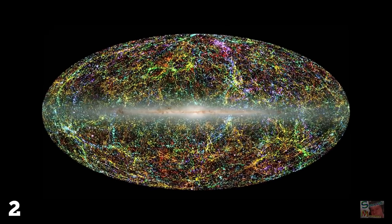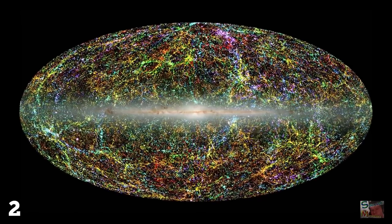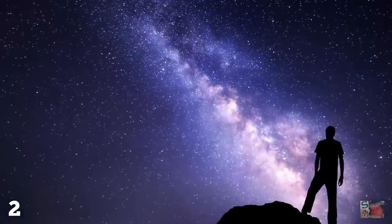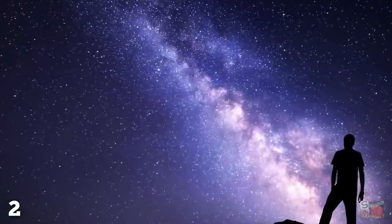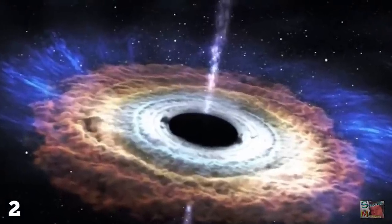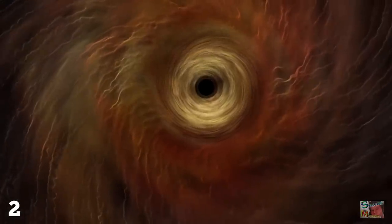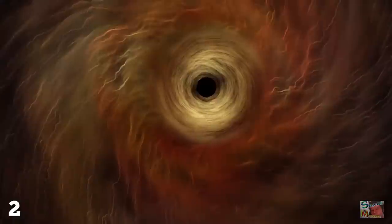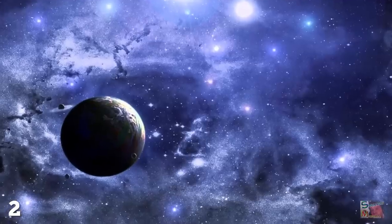Number 2. Dark Flow. When scientists are attempting to find black holes, they don't do so by looking for them directly, as since they emit no light, this would be impossible. Instead, they detect them by observing their effects on surrounding objects, such as planets and stars.